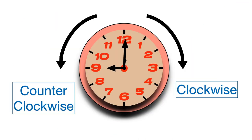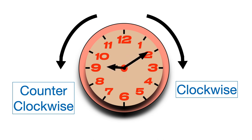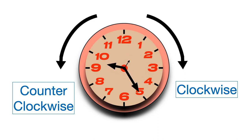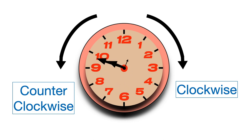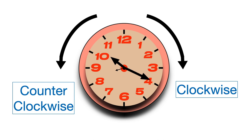The tiny hand points the seconds of the time. When the second hand rotates all the way clockwise, it is 60 seconds and makes one minute. 60 seconds equals one minute. Each number corresponds to five-second marks.